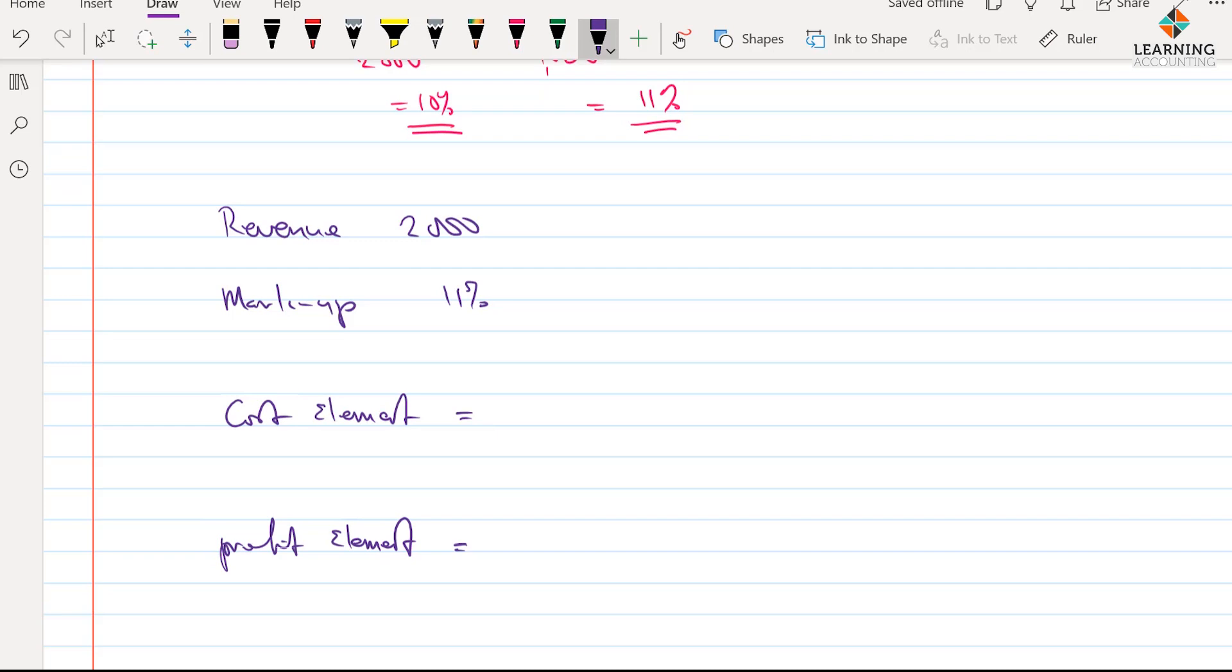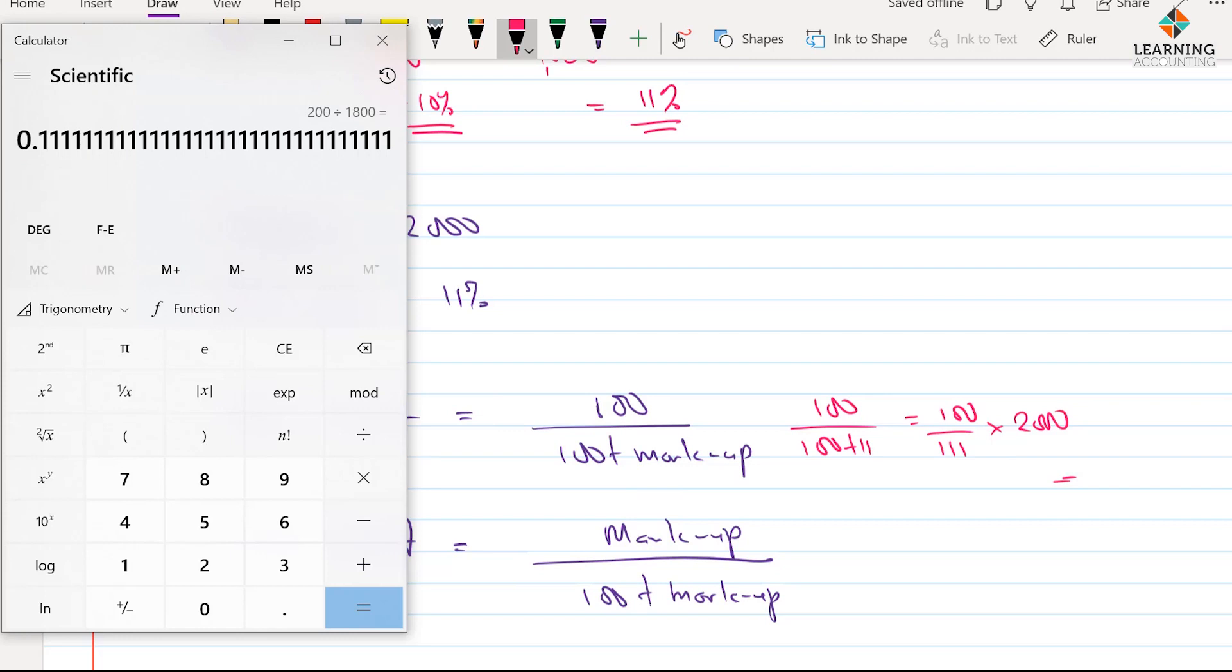And therefore, if it is a cost element you're looking for, then it will be 100 over 100 plus markup. So, which gives me 100 over 111, multiply by 2,000. Of course, it will give me an approximate as well. So, we have 100 divided by 111, multiply by 2,000. And like I said, it will be an approximate. So, we have it to be 1,800 approximate.